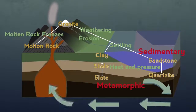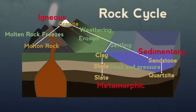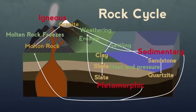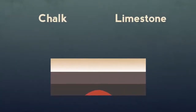Tectonics carry the rocks down into the earth's hot mantle where they melt and emerge once again as igneous rocks, completing the rock cycle.